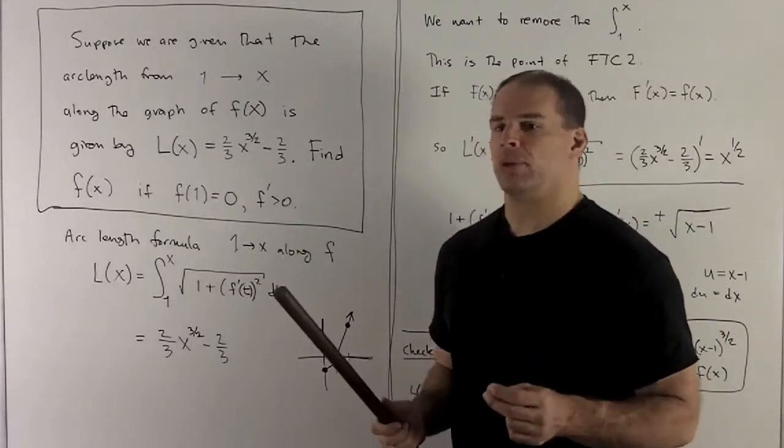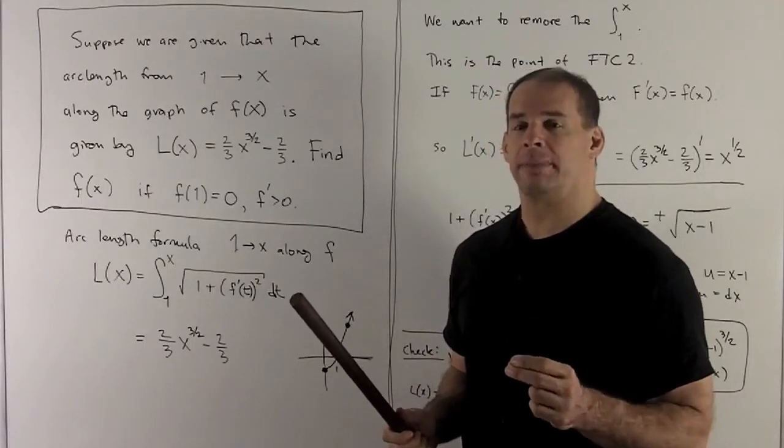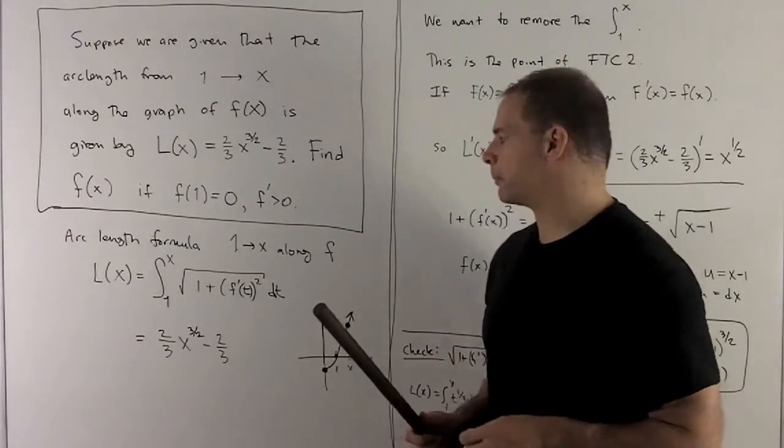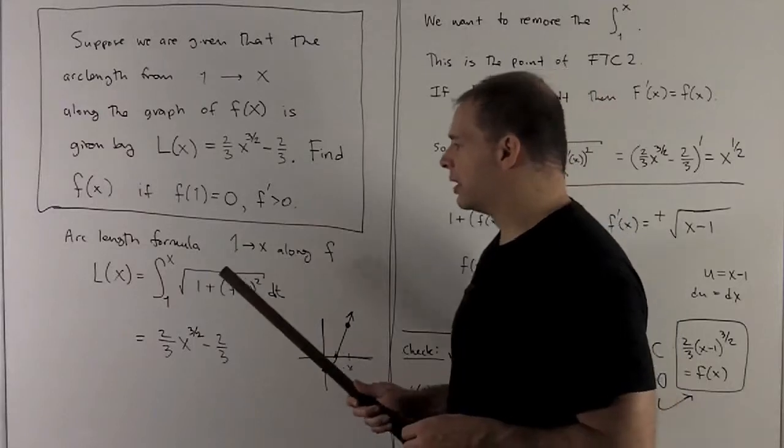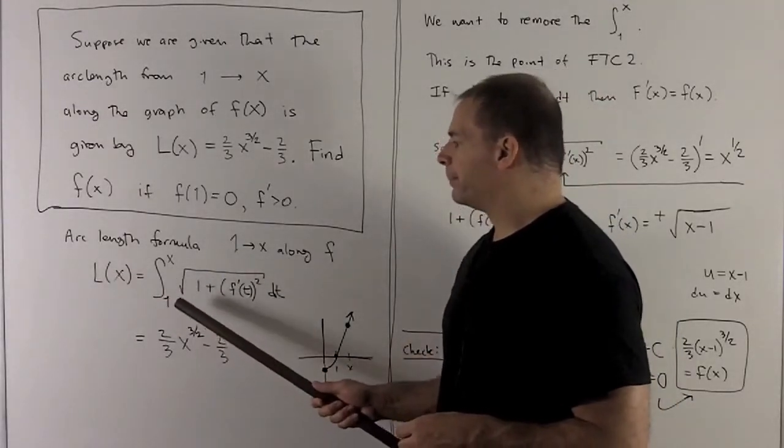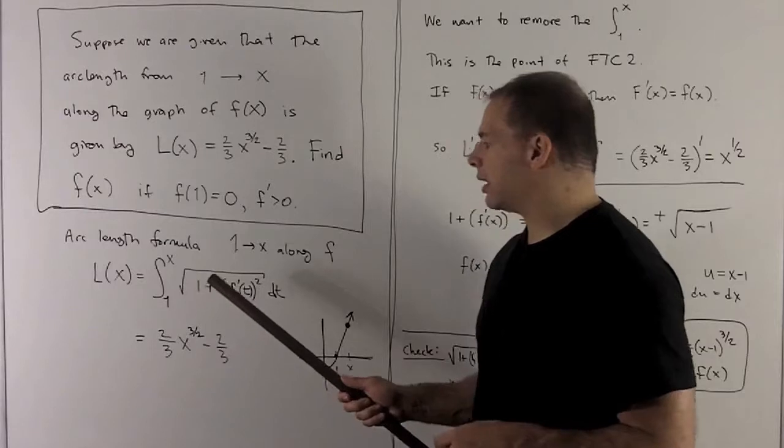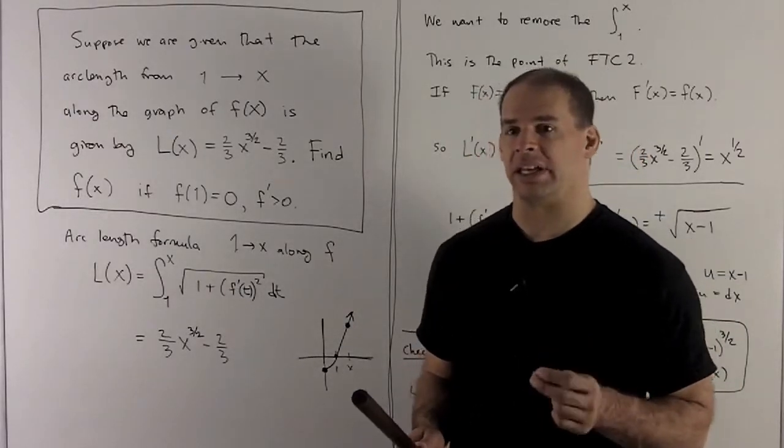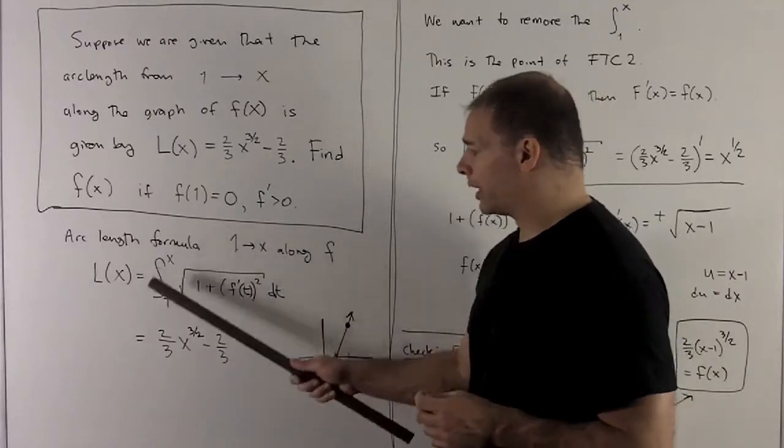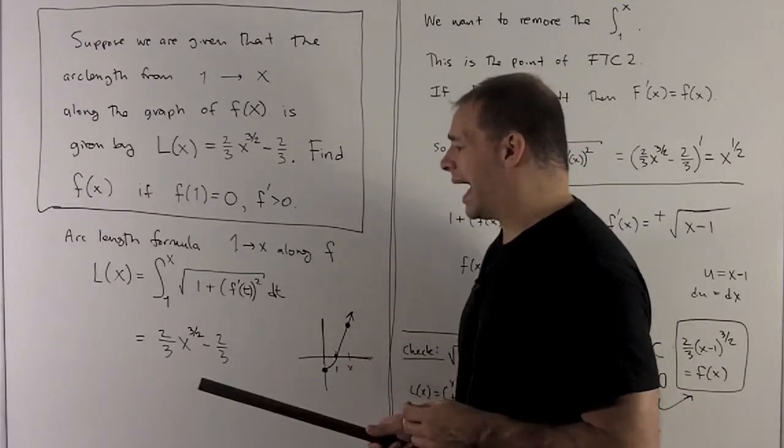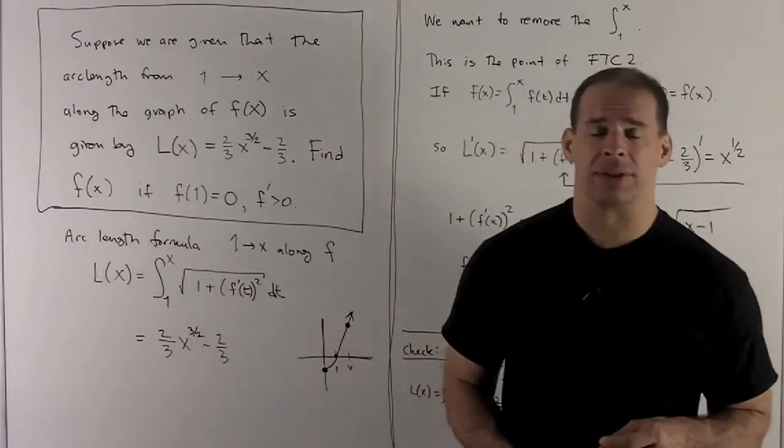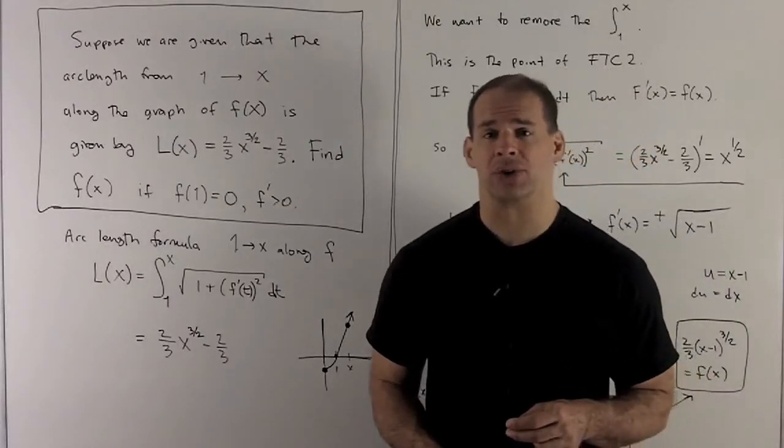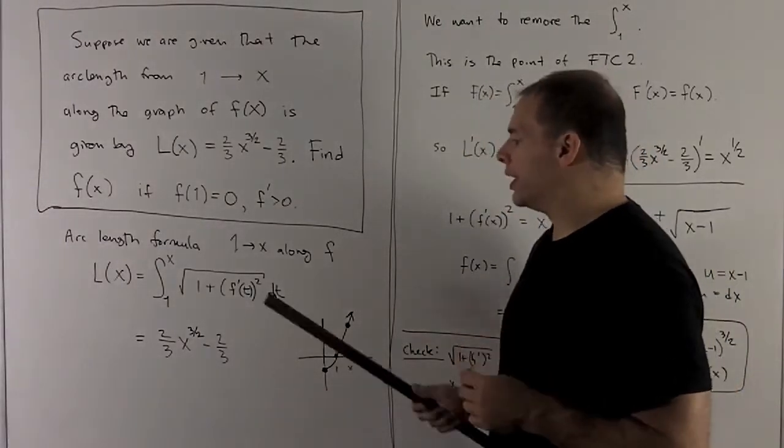Our first step, just write down your arc length formula, and then see if we can make something of it. So in this case, L(x) would be the definite integral from 1 to x of sqrt(1 + f'(t)^2) dt. We're given this as a function, though, as 2/3 x^(3/2) - 2/3.